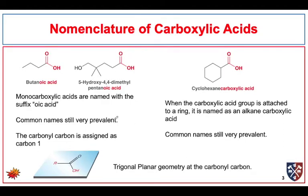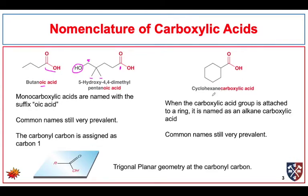We name carboxylic acids by substituting 'oic acid' for the 'e' in the root name. So butane becomes butanoic acid, meaning there are four carbons. By default, the carboxylic acid functionality is a terminal group. Here we see 5-hydroxy-4,4-dimethylpentanoic acid: the parent chain is five carbon atoms long, we start with the carboxylic acid as number one, at the four position we have two methyl groups, and at the five position we have a hydroxyl group. When the carboxylic acid is attached to a ring, we can call it, for instance, cyclohexane carboxylic acid.